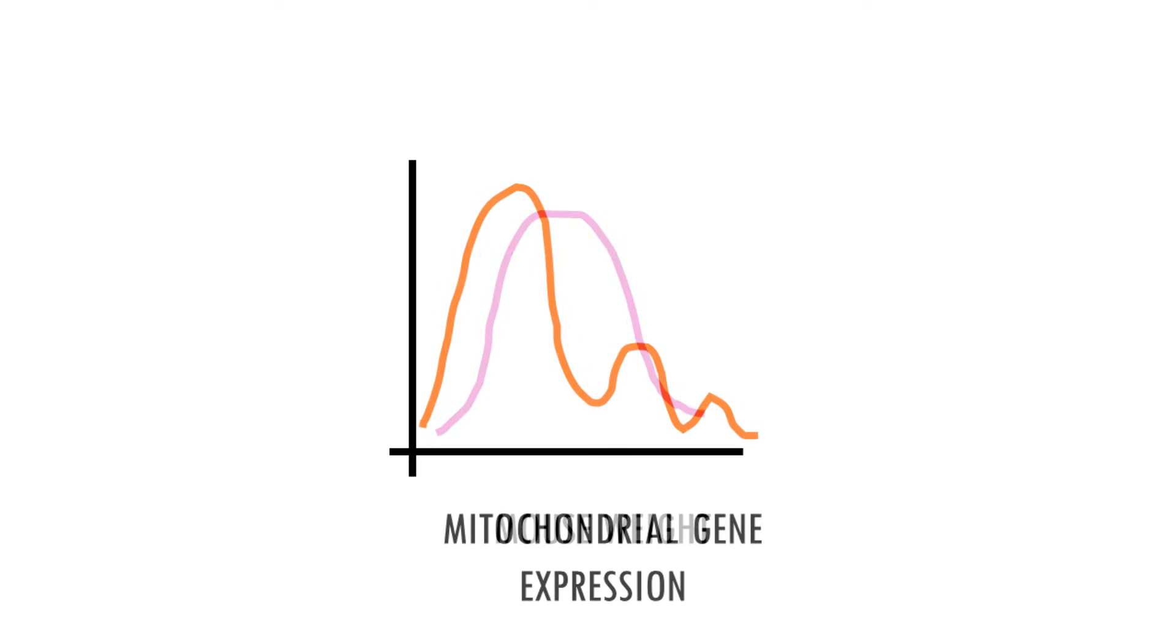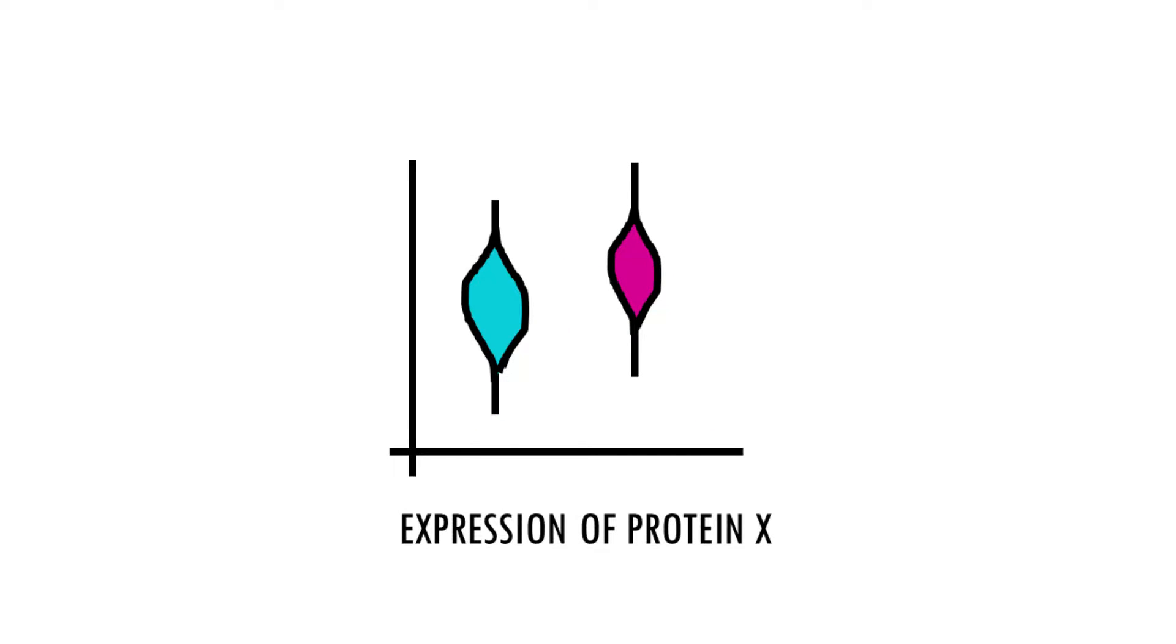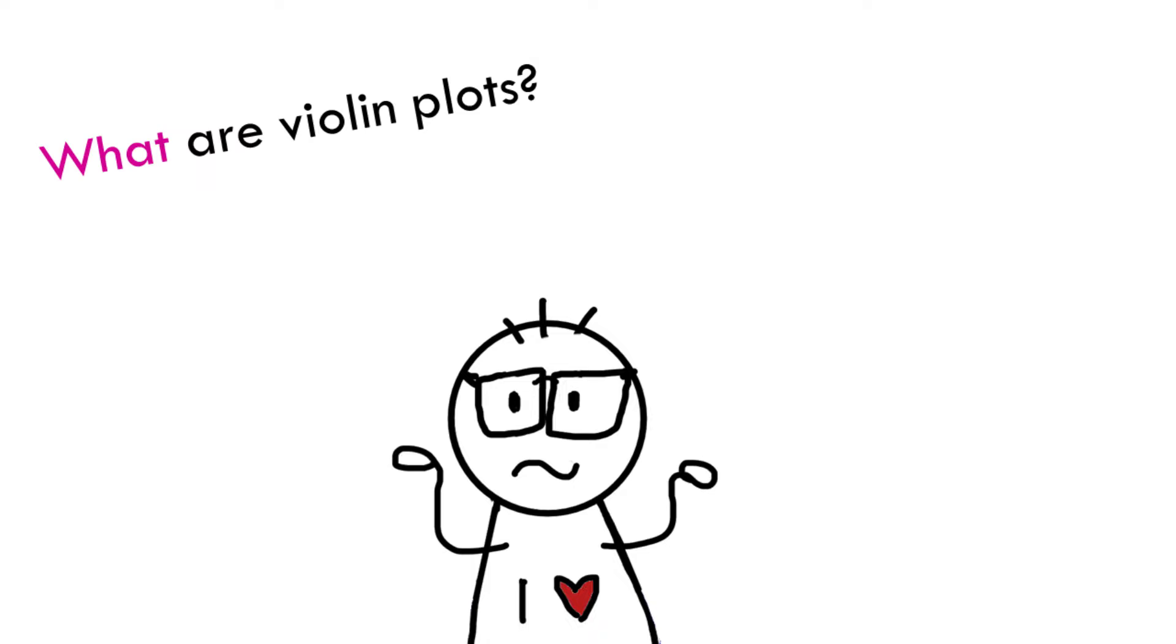A great way to visualize and summarize the distribution of a continuous numeric variable is through violin plots and box plots. In this video, we're going to learn how to interpret violin plots and box plots. So if you're ready, let's dive in.